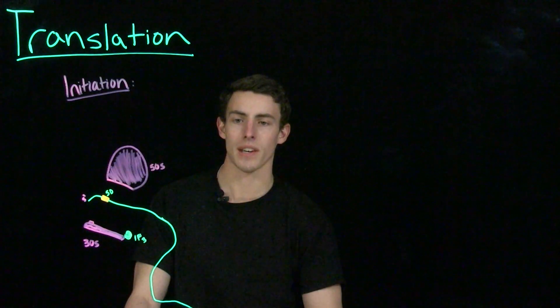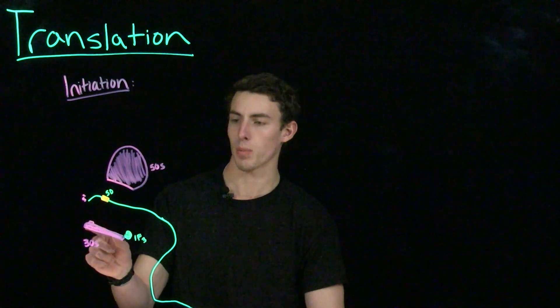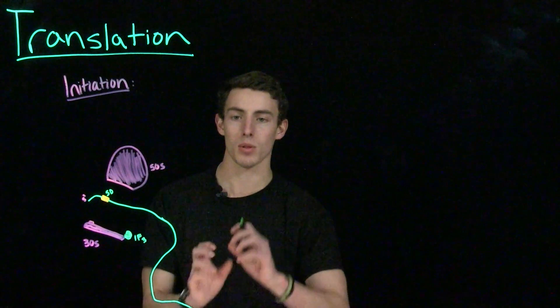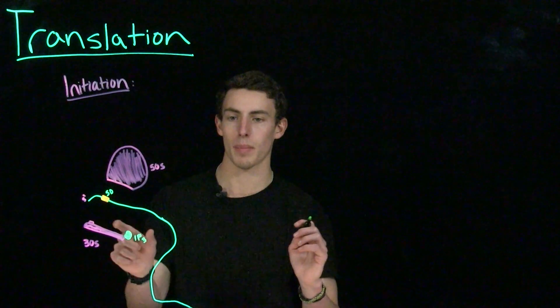So at the start of initiation, IF3 is bound to the 30S, or the small subunit of the ribosome, and it's preventing the 50S, or the large subunit, from complexing with this. And when those two segments are separated from each other, that allows this mRNA molecule to bind.